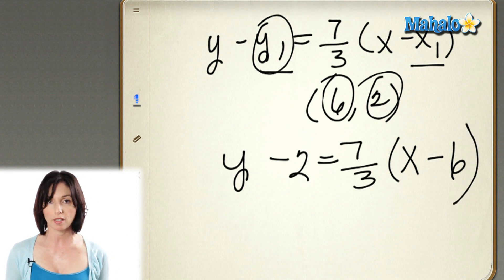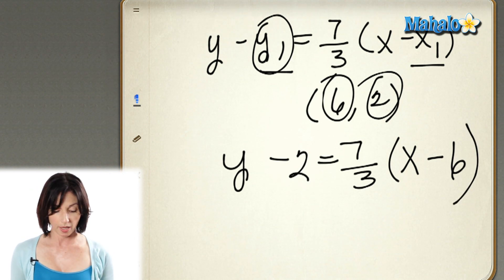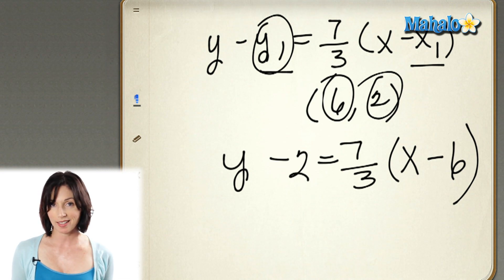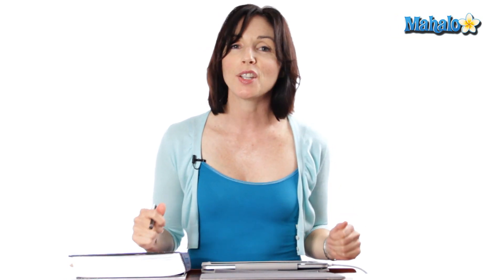So an equation of this line in point slope form is y minus 2 equals 7 thirds x minus 6. And if you do some algebra and rearrange this, you'll get the equation in slope intercept form. That's how you find the equation of a line in point slope form.